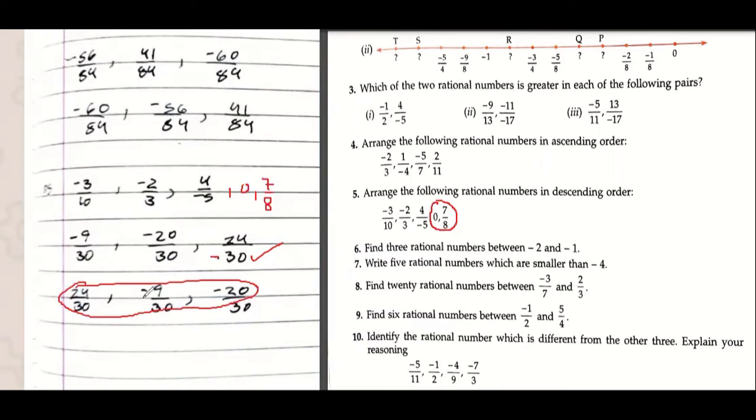Yeah it should be descending that means sabse bada se chota. Yeah so among these it will be minus 9 upon 30. Then okay it would be sabse bada minus 20 upon 30 yes.